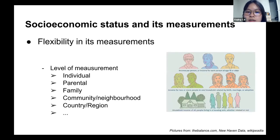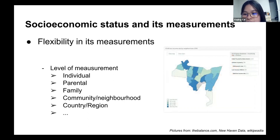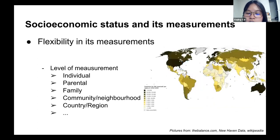We also need to consider what level of measurement is used for SES in the study. Individual SES, parental SES, and family SES are the three most commonly used ones. But on a more extensive level, we can also measure neighborhood SES — for example, here is the neighborhood SES of New Haven, where we are currently living. And on a higher level, we can also measure things like gross national income of a whole country or region.